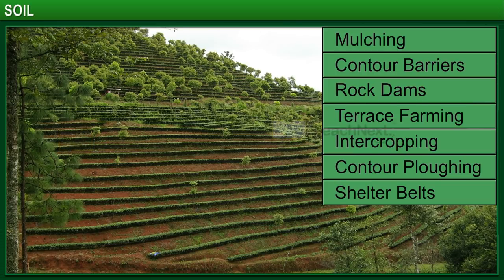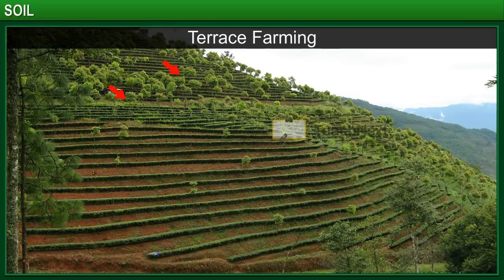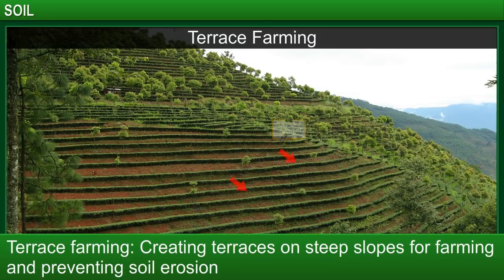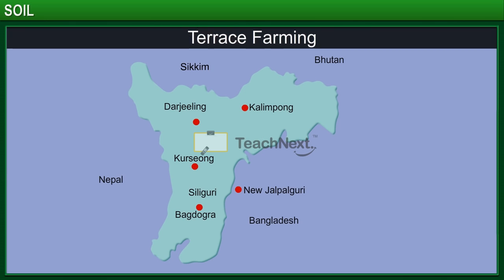To provide flat surfaces for farming on steep slopes, terraces are created. This is called terrace farming. Using terraces also prevents soil erosion and surface runoff. If you go to hill stations like Darjeeling, you will see that terrace farming is widely practiced there.